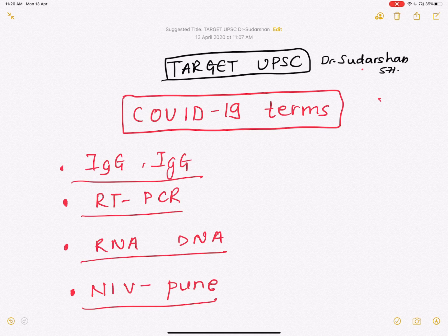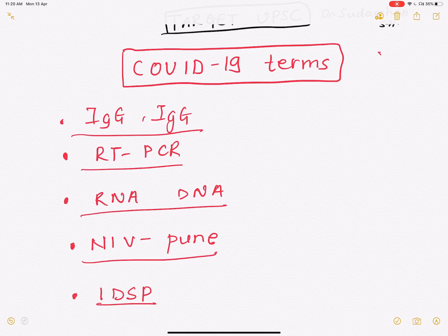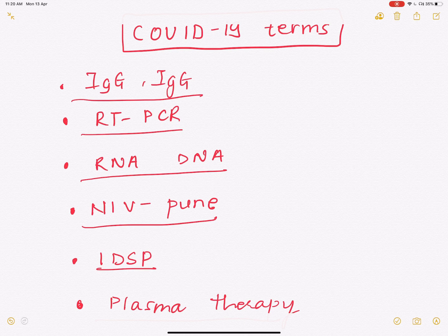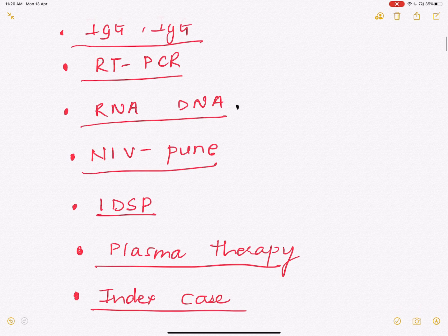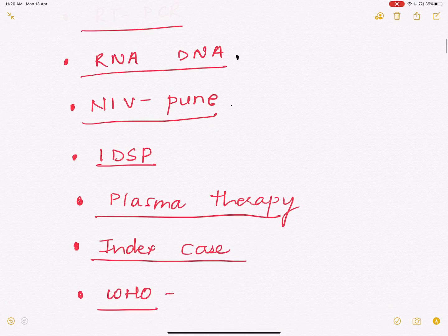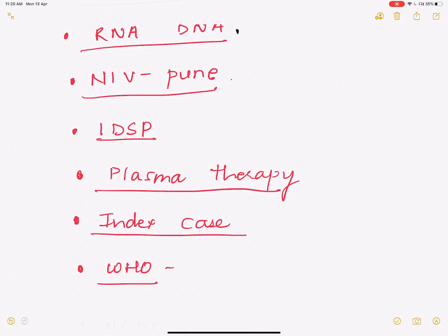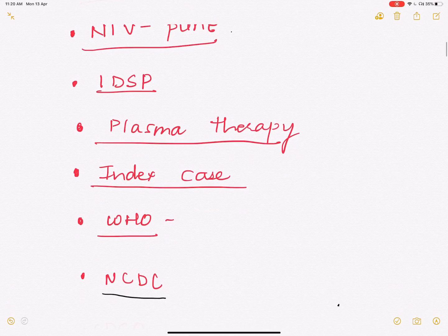We are going to cover important COVID-19 terms which are in use, and these are important from a PLIMS perspective. You can expect at least two to three questions around it. These are basically science and technology related questions. We will cover immunoglobulins, reverse transcriptase PCR, difference between RNA and DNA, institutions such as the National Institute of Virology Pune, the IDSP scheme, and plasma therapy.